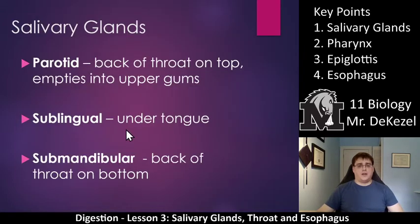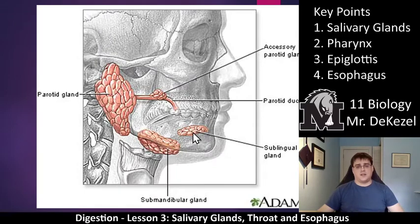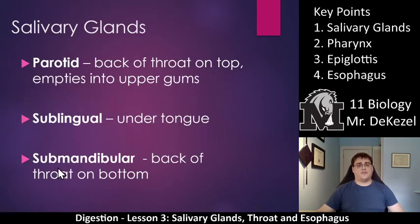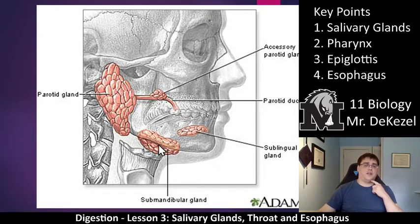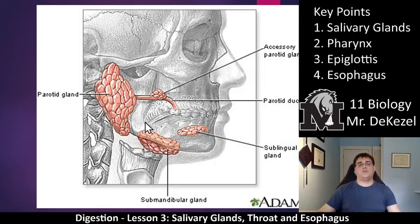We have the sublingual gland, which is under the tongue. Lingual relates to speech, so under the tongue makes sense because the tongue is used for speech — that is the sublingual gland. Then we have the submandibular gland, which is in the back of the throat on the bottom. Submandibular, because the mandible is your jaw, so under the jaw at the back of the throat on the bottom. These three major glands keep your mouth moist and have tubes that connect throughout to dispense saliva.